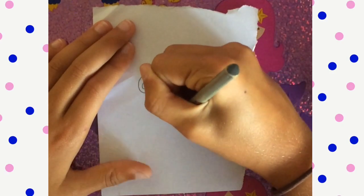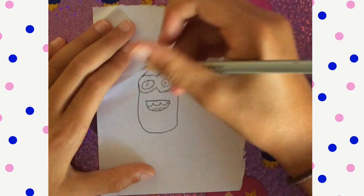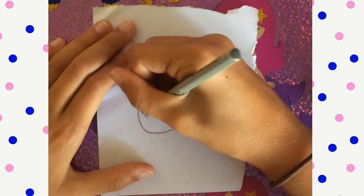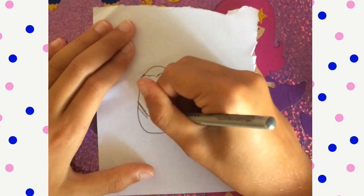Then you will go down and you will come back up for a Minion. Then you will draw the overalls so two lines going down on both sides of the body and then you'll connect them.